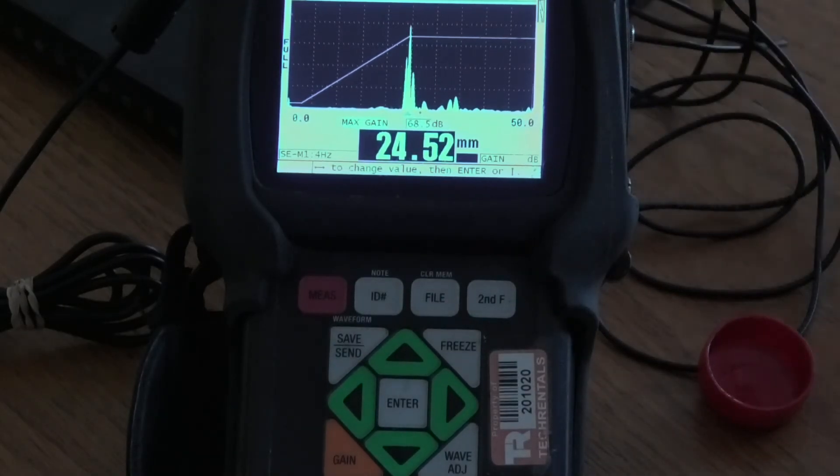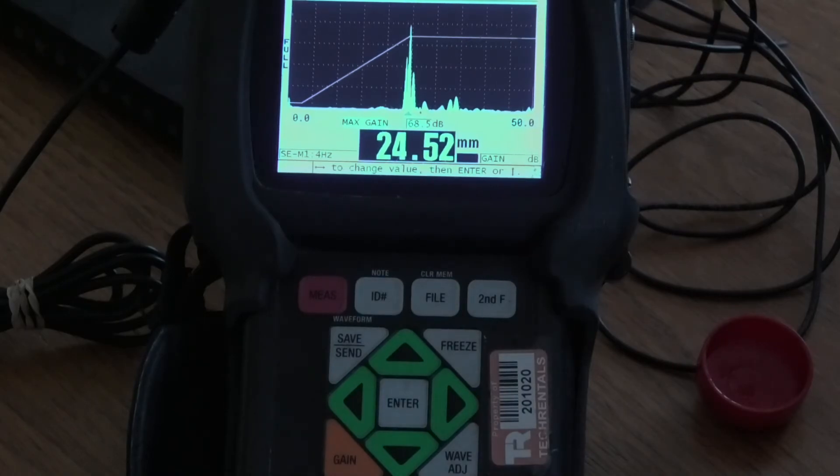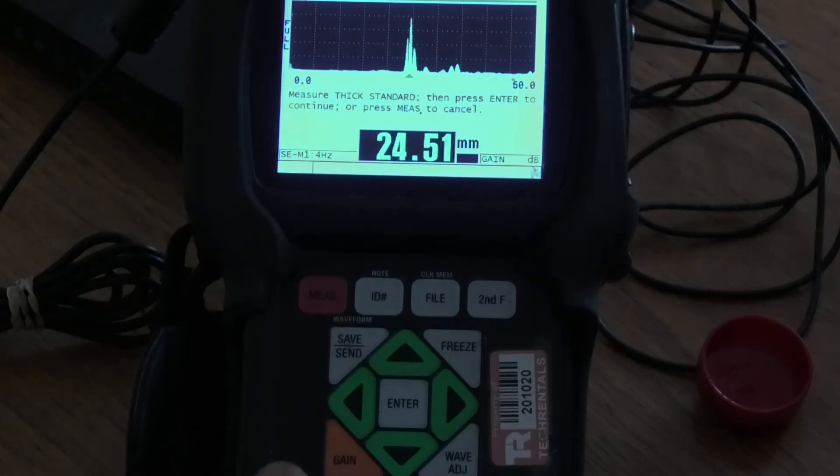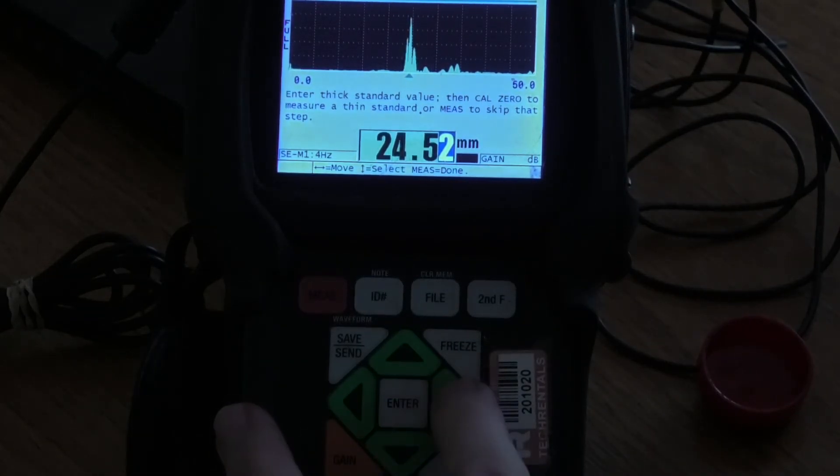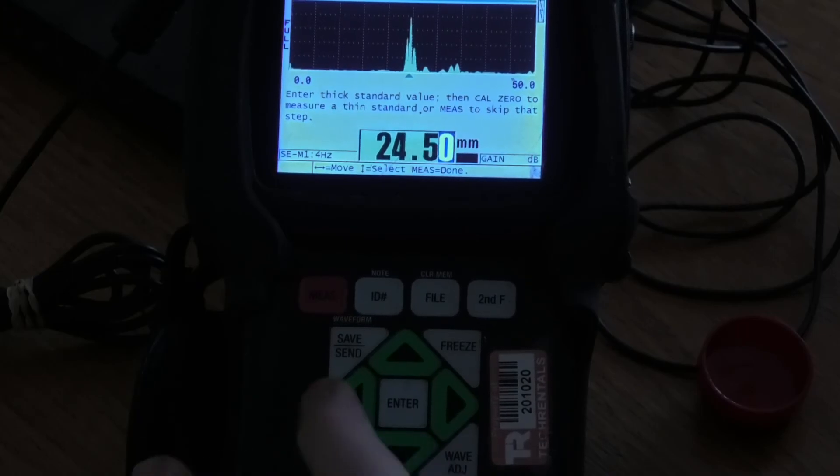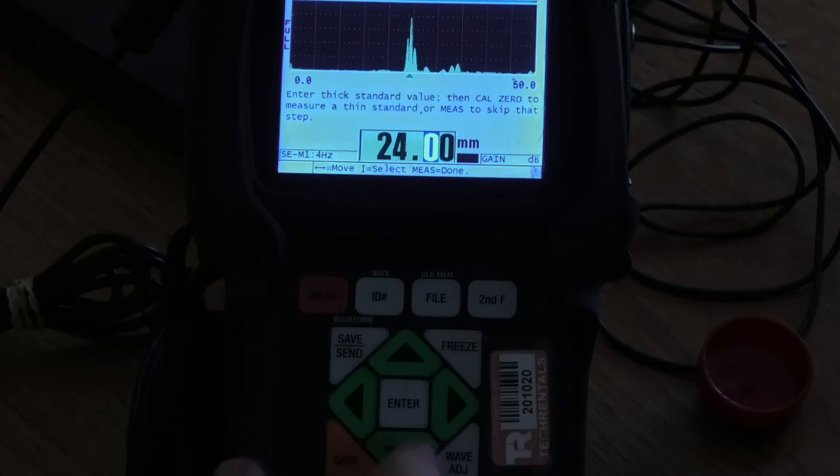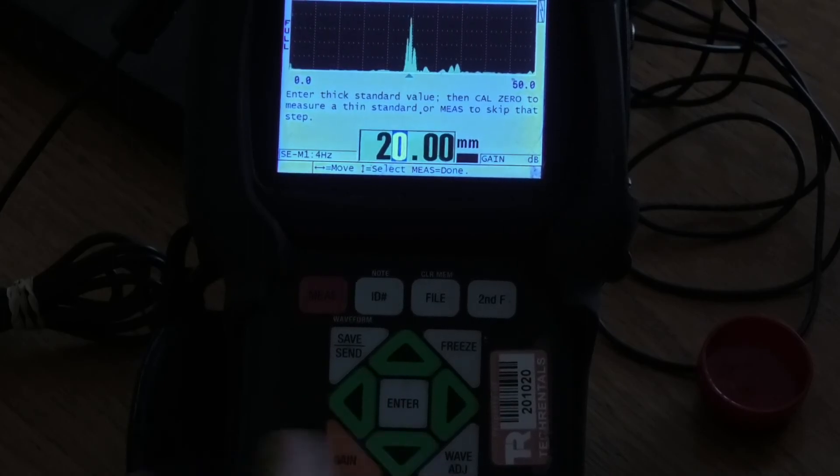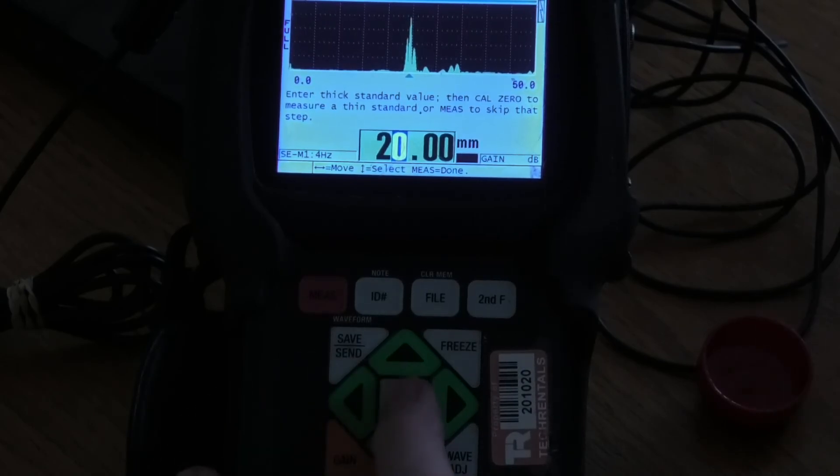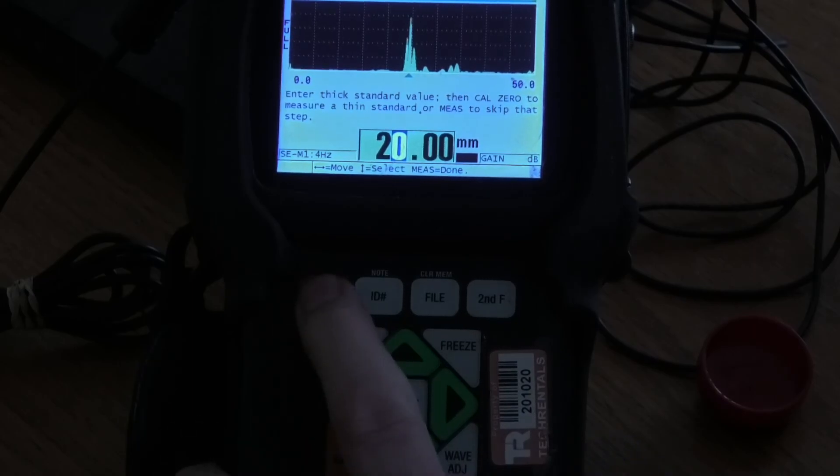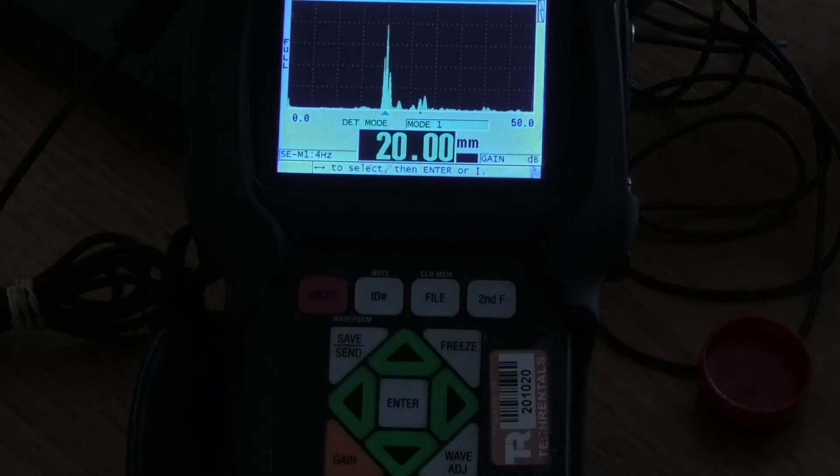So now the next thing I've got to do is push cal velocity, which is a little button down here. I put cal velocity. If we push enter, that holds it. And now I can use the left and right arrows to set this to 20 millimeters. That is adjusting the actual velocity. We set 1830, it isn't actually that, it's another figure. So if I now select measure, that will be done. And guess what? There we have our 20 millimeter thickness.